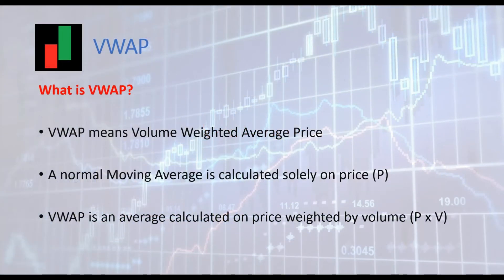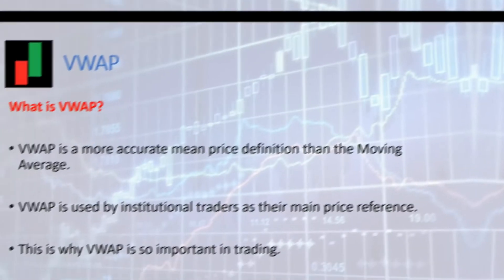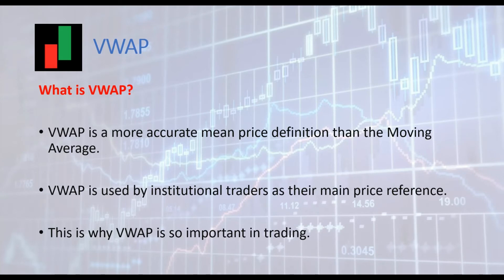First, we must understand what is VWAP. VWAP stands for Volume Weighted Average Price. A usual moving average is calculated solely on price, whereas VWAP is a mean price calculated as an average on price and volume. VWAP is an accurate calculation of the mean price for an instrument and is the price reference used by institutional traders. This is why VWAP is so important in trading.